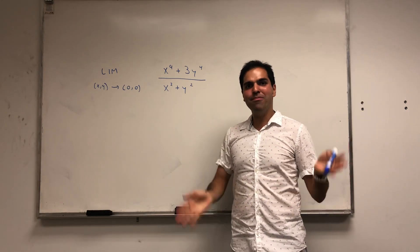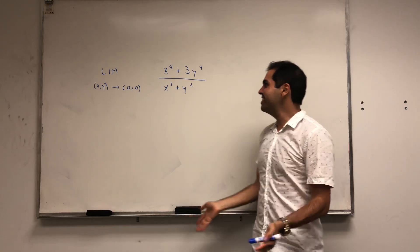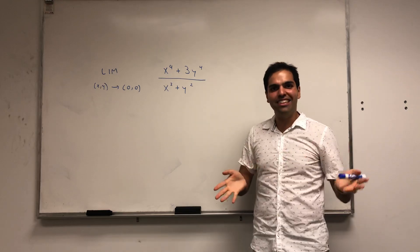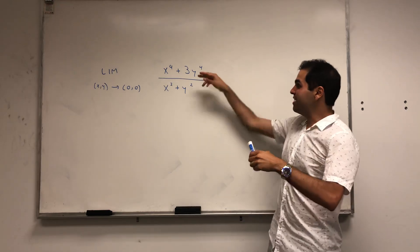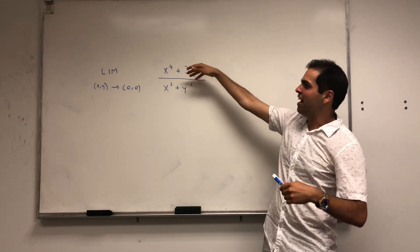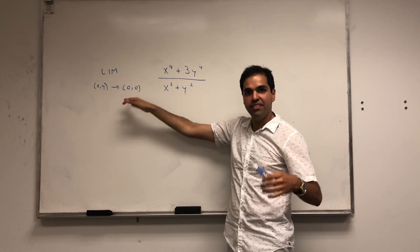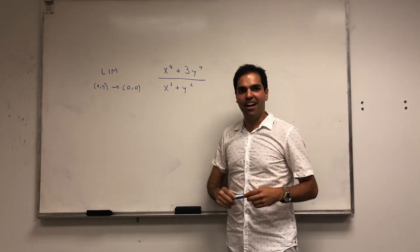If you remember for multivariable calculus, it's usually very hard to evaluate a limit. You would have to do an epsilon-delta argument, because you would really have to show that no matter how you approach (0,0) in this case, you always get the same value.